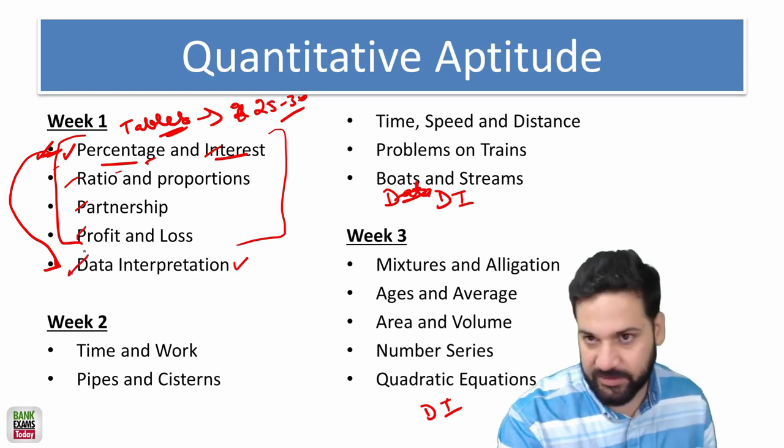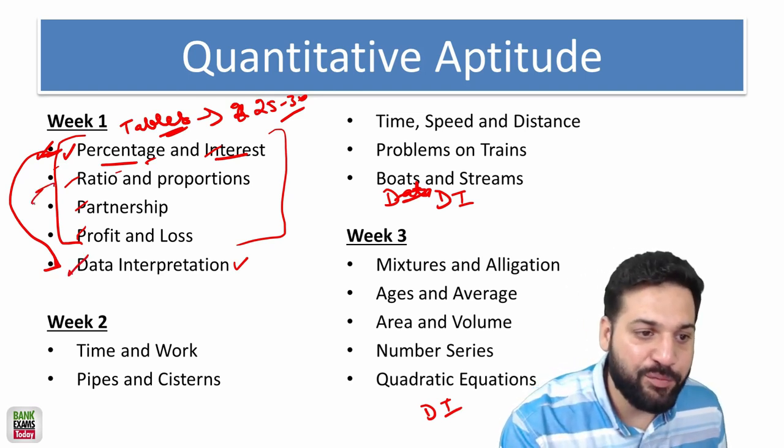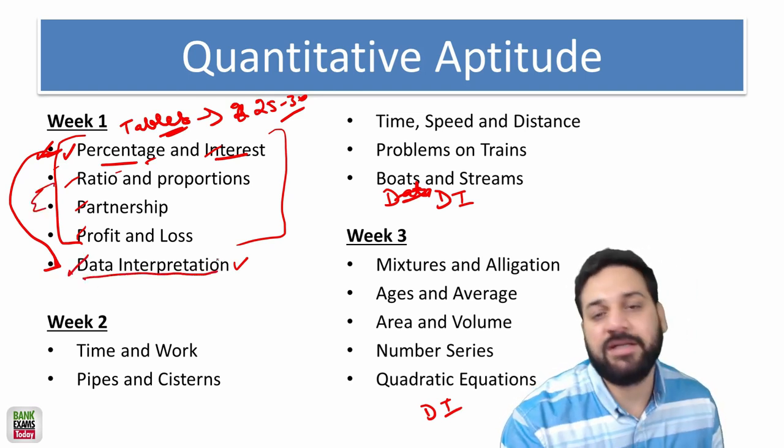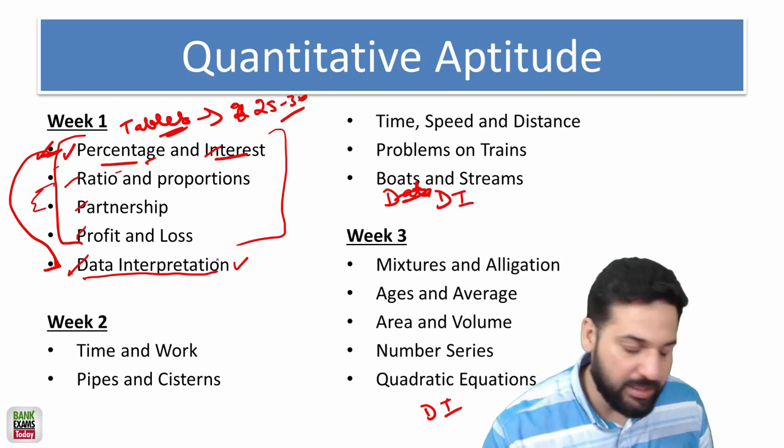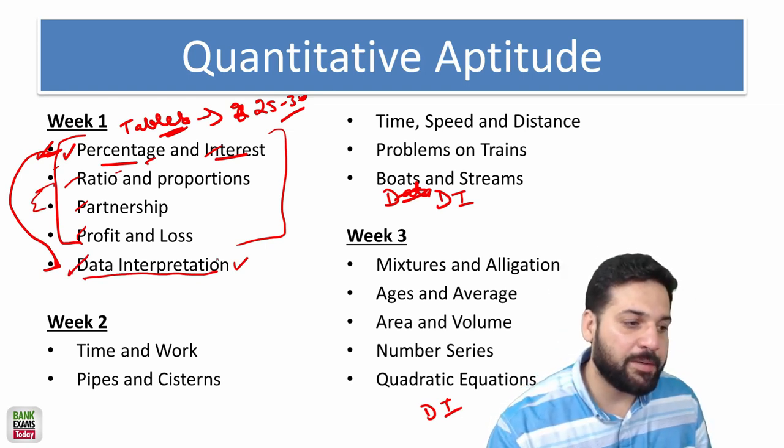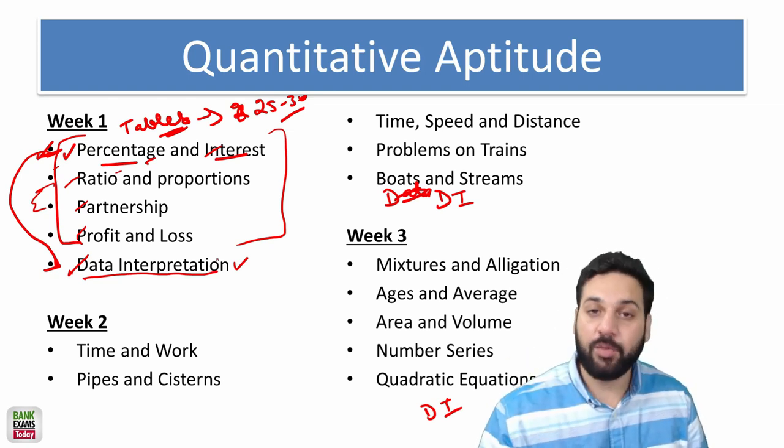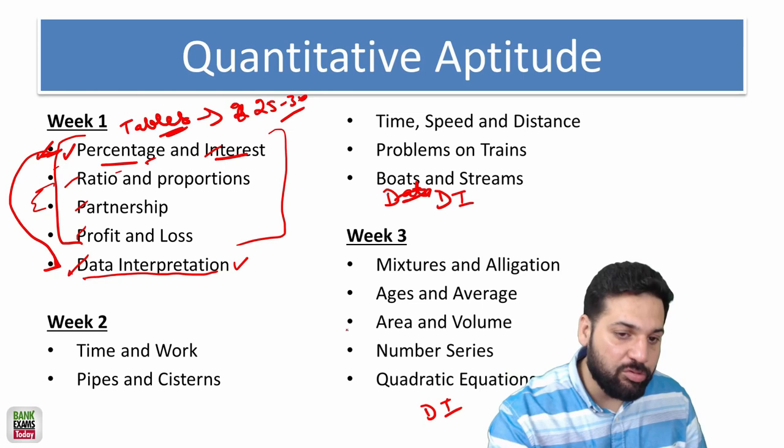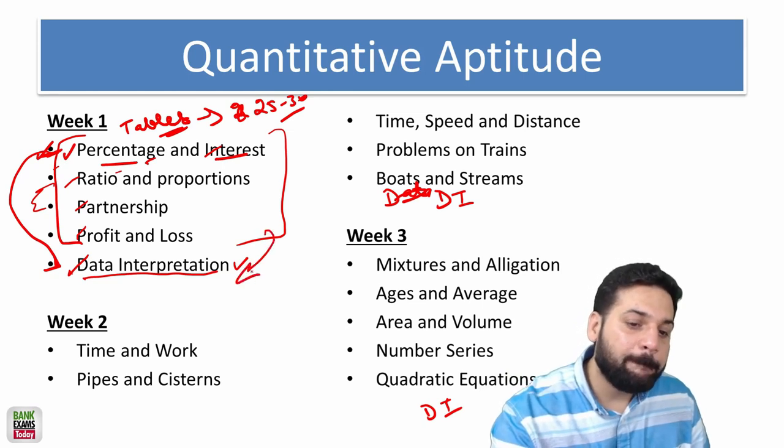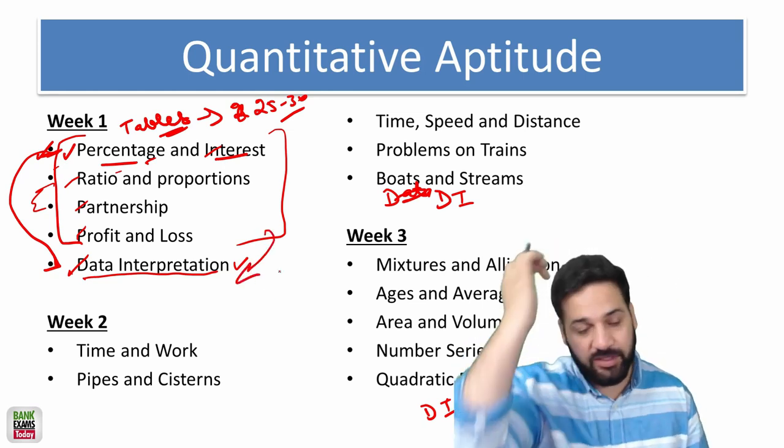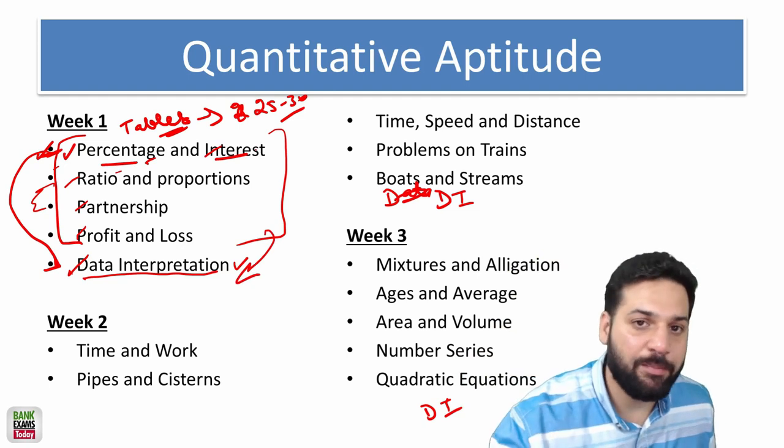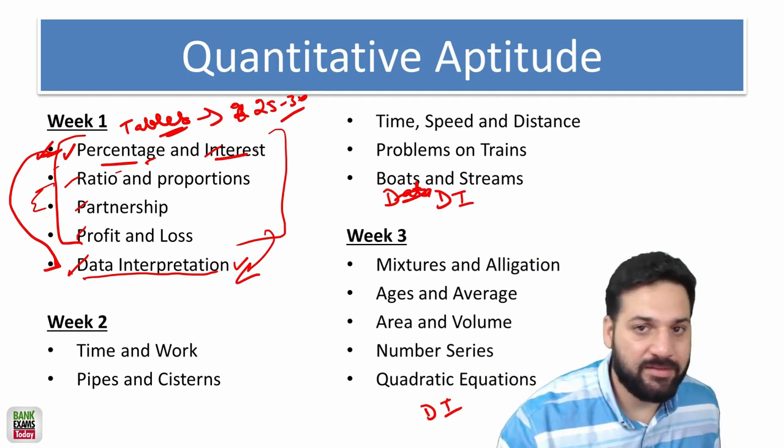You should be able to solve simple questions related to partnership, profit and loss, percentages, interest, ratios and proportion to solve the data interpretation sets. After doing these four chapters, move on to data interpretation. There is no proper method, it is actually kind of the aptitude. You just need to jump on to the practice sets of data interpretation once you're done with these chapters. Practice it.